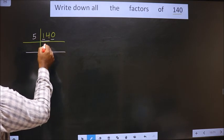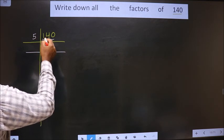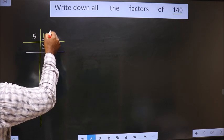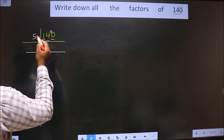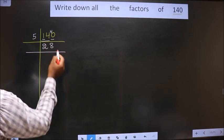A number close to 14 in 5 table is 5 times 2 is 10. 14 minus 10 is 4. 4 carried forward making it 40. When do we get 40 in 5 table? 5 times 8 is 40.